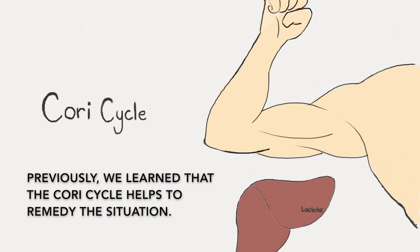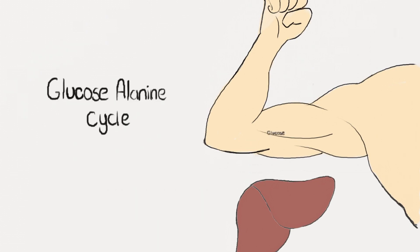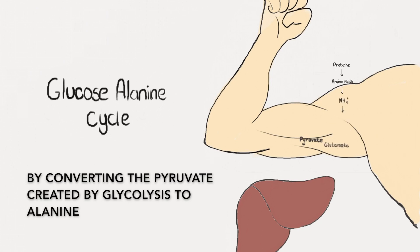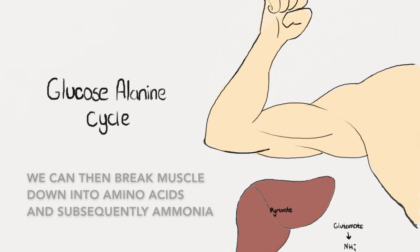Previously, we learned that the Cori cycle helps to remedy the situation. However, the glucose-alanine cycle can also help. By converting the pyruvate created by glycolysis to alanine, we can then break muscle down into amino acids and subsequently ammonia.